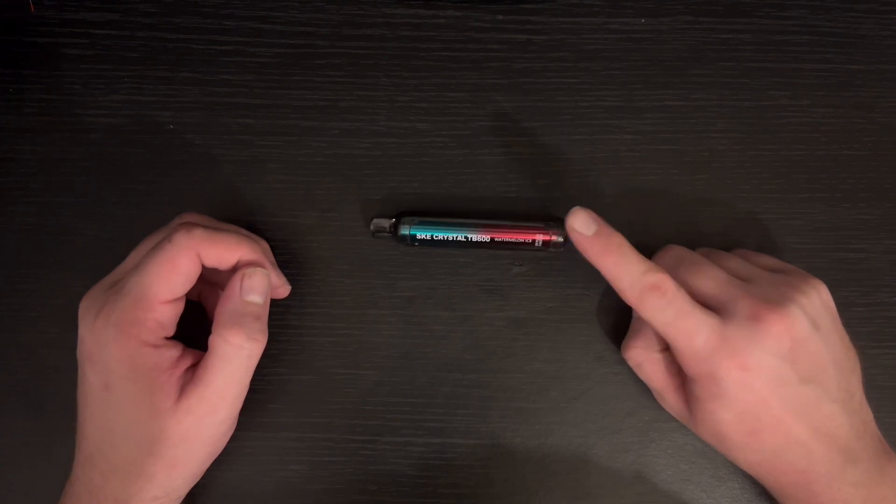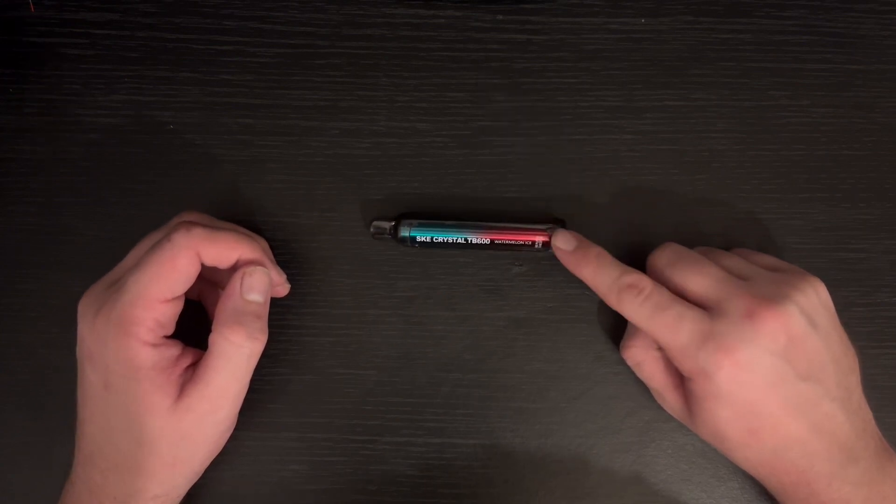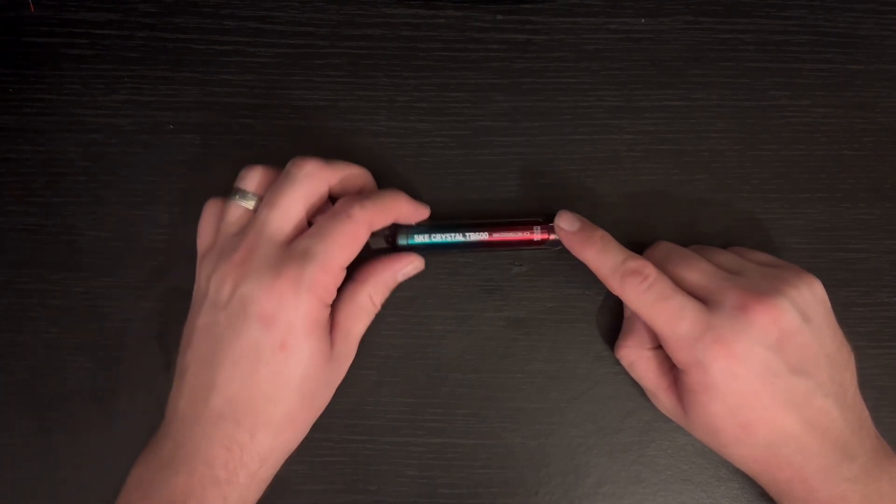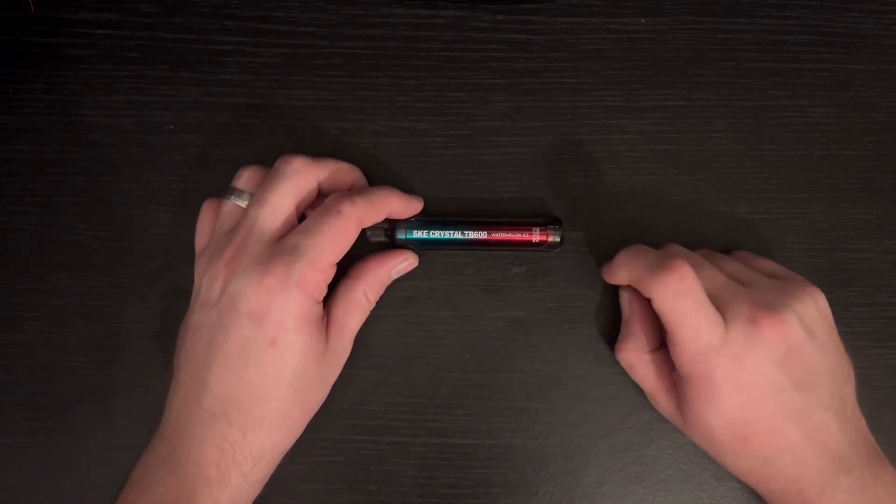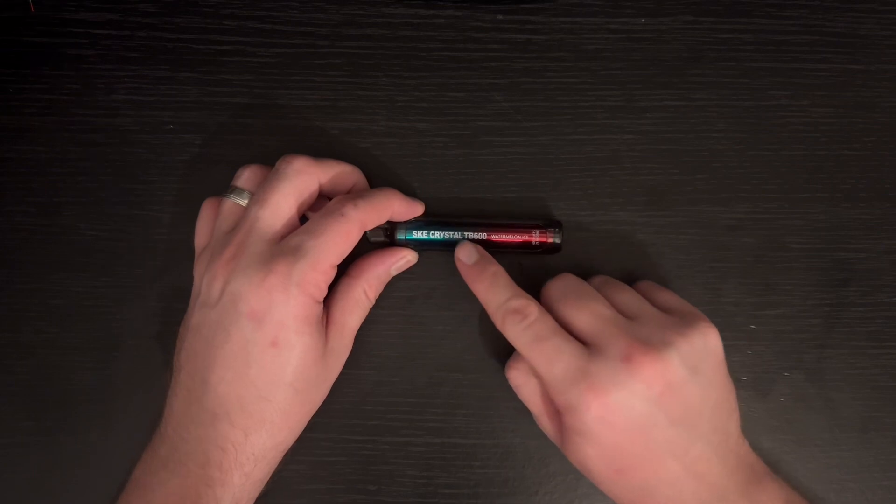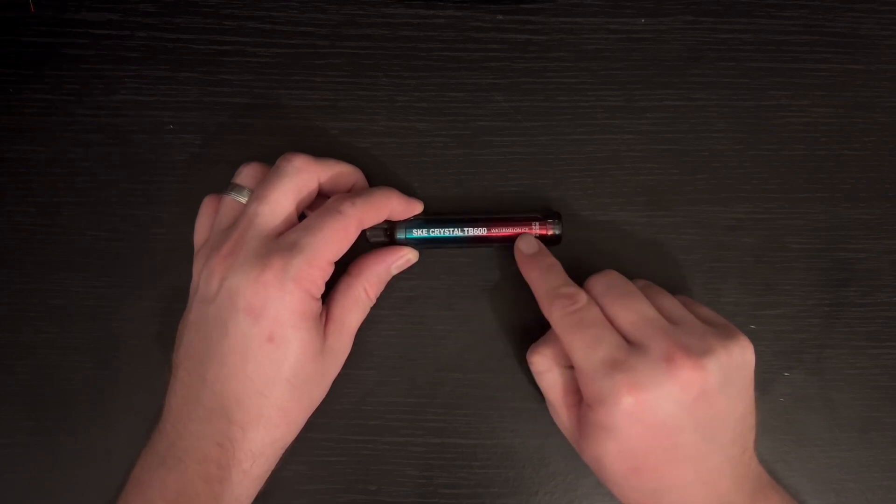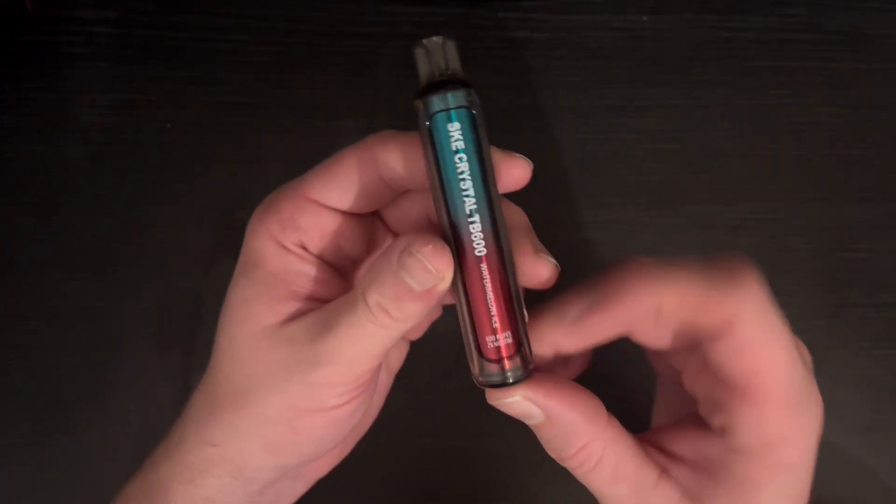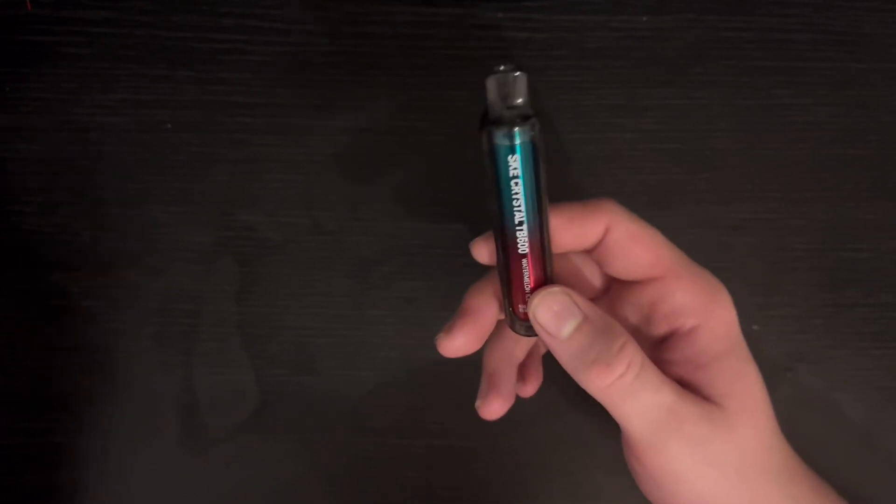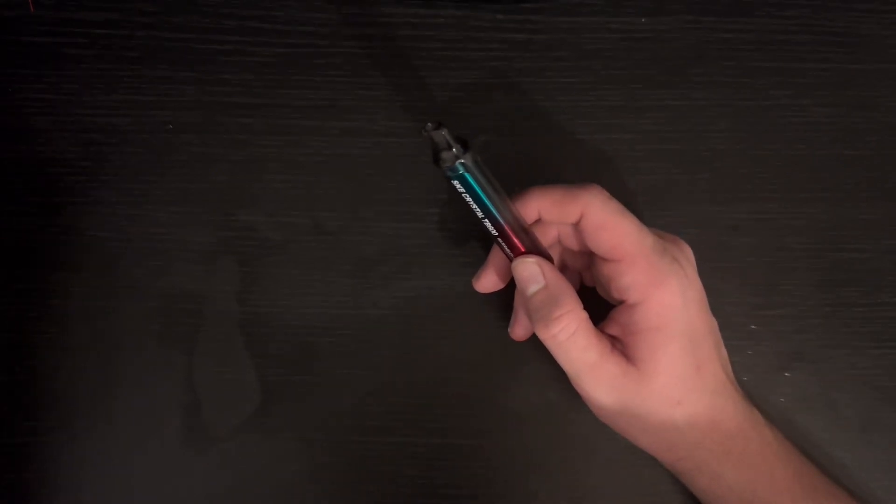I think I've saved the coolest looking one till last. This is the SKE or Sky Crystal TB 600. It's a watermelon ice flavor and it's 600 puffs. How much did I pay for this again? Let me quickly check my notes.